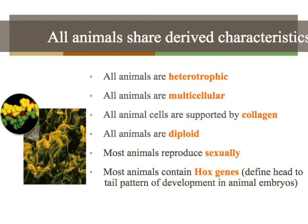I'm sure that you came up with some great things on your list. We're going to go through the derived characteristics of animals right now. So on your note outline, jot these things down. All animals are heterotrophic — that means they are consumers. All animals are multicellular.